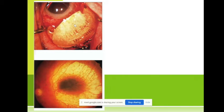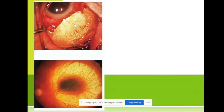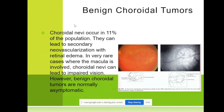Very important to remember — how large is the tumor. Remember that 50 percent give metastasis. There are also benign tumors, and I mentioned the nevus. Choroidal nevi occur in about 11% of the population.